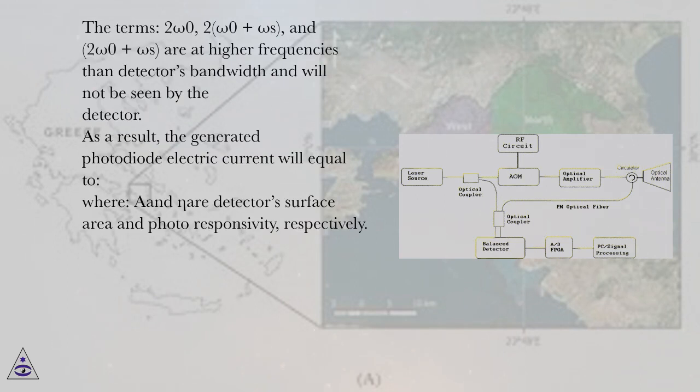The optical intensity as seen by the heterodyne detector is given by: The terms 2ω₀, 2ω₀ + ωₛ, and 2ω₀ + ωₛ are at higher frequencies than detector's bandwidth and will not be seen by the detector.